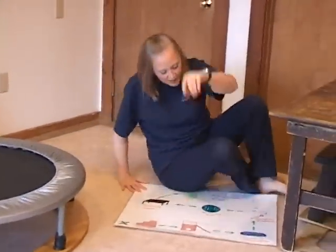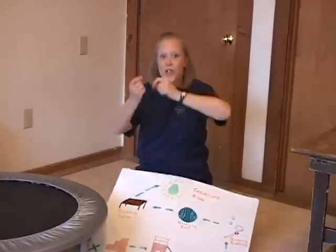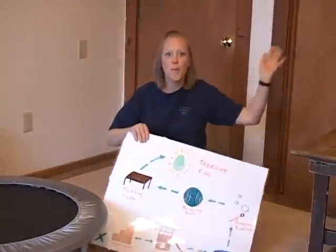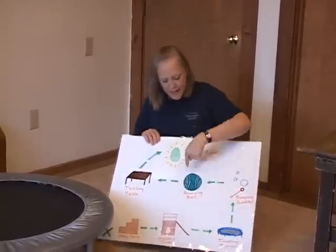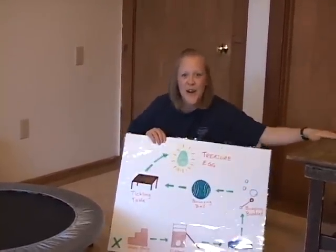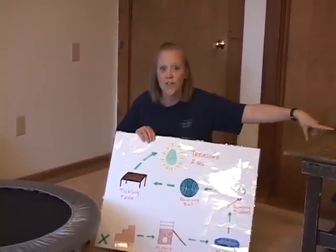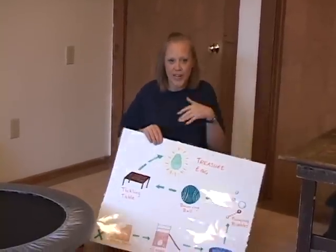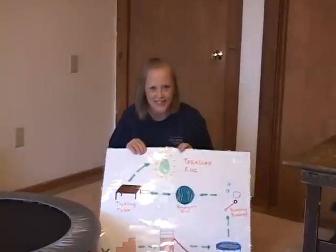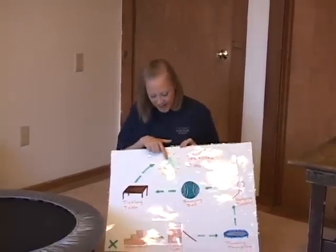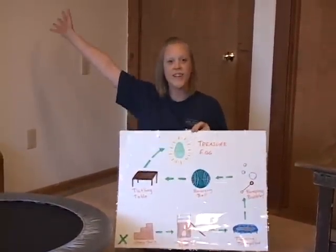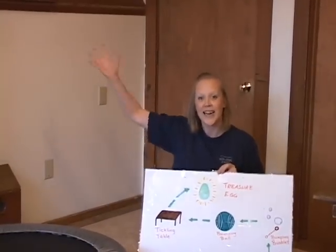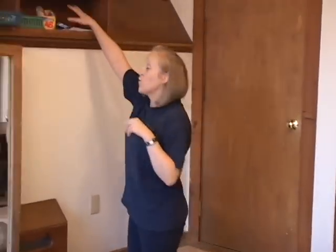Next, over to the bumping bubbles — grab the bubbles and start blowing them so they pop and bump all over the place. Then on to the bouncing ball and the tickling table, where you can tickle your child, or they can tickle you, or you can make the table actually tickle you as you jump over it. It's so fun — and then you get to the treasure egg!